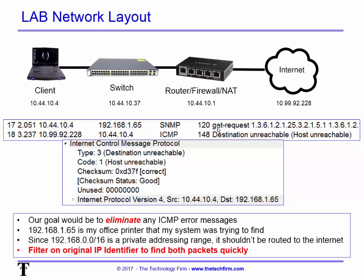It sends an SNMP packet. A lot of people don't know that network printers by default use SNMP to check statuses. So that's my PC trying to find its printer — it's not going to find it, because that 192.168.1.x address is not on this network at all. The router is configured with a default route, so if the destination isn't local it gets sent out to the internet.